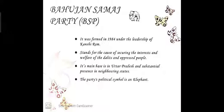BSP also has presence in Madhya Pradesh, Chhattisgarh, Uttarakhand, Delhi, and Punjab. The Bahujan Samaj Party formed the government under Mayawati in Uttar Pradesh several times by taking the help of different political parties at different times. The party's political symbol is an elephant.